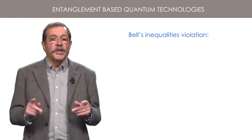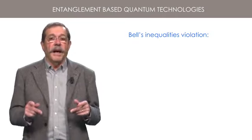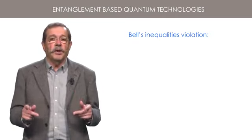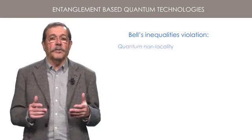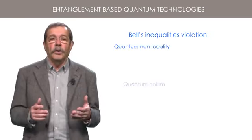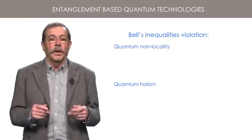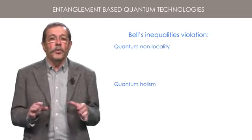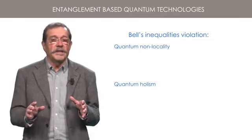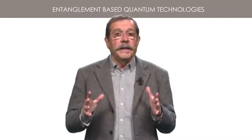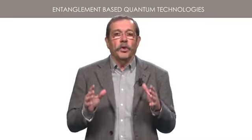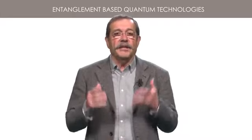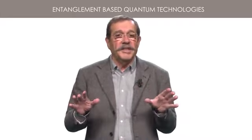According to Einstein himself, we must therefore accept that the pair of entangled objects has weird properties that we can describe either as quantum non-locality or quantum holism. Quantum non-locality is the fact that a measurement on one of the entangled objects affects instantaneously the state of its partner, whatever the distance.